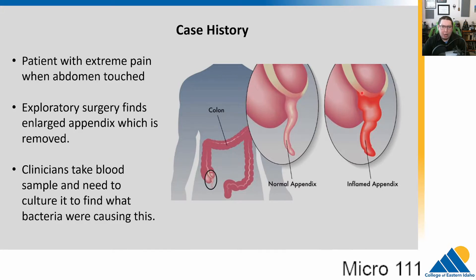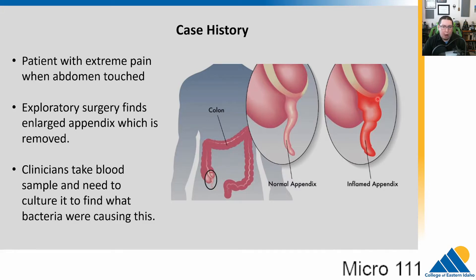The microbes can get into the blood and cause sepsis. We need to take a blood sample and culture the microbes to figure out what's causing the infection, because we need to prescribe antibiotics. You treat gram positives differently than gram negatives. Now, here's a problem: a lot of the gastrointestinal tract is a slightly anaerobic environment — there's very low oxygen in there. So we have to grow our microbes smartly.